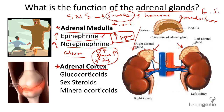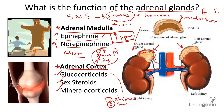This outer part of the adrenal glands produces glucocorticoids, sex steroids, and mineralocorticoids. Glucocorticoids function to, one, cause the liver and other cells to produce glucose from fats and proteins, and two, act as an anti-inflammatory agent.